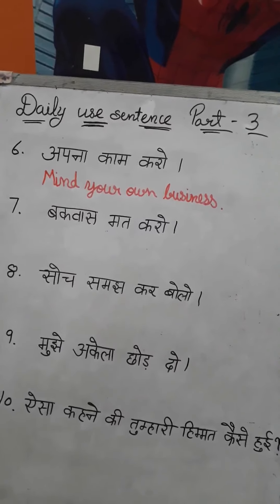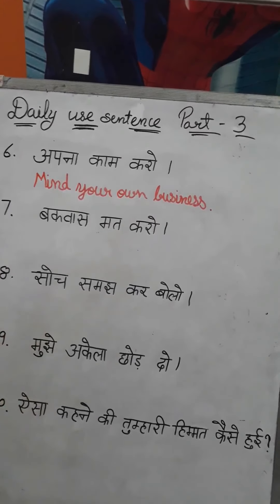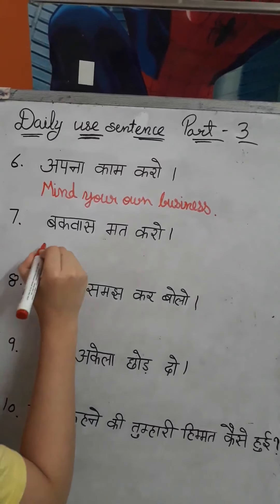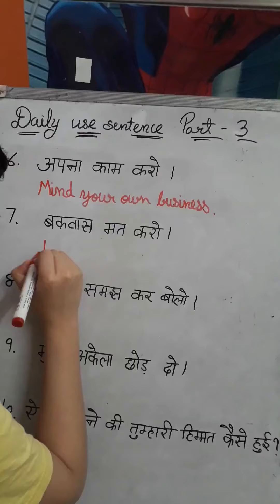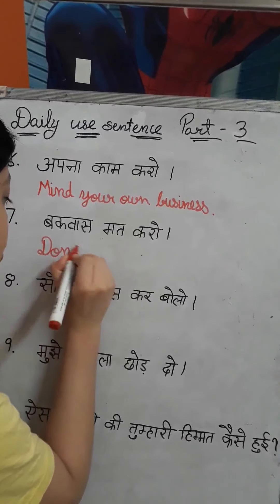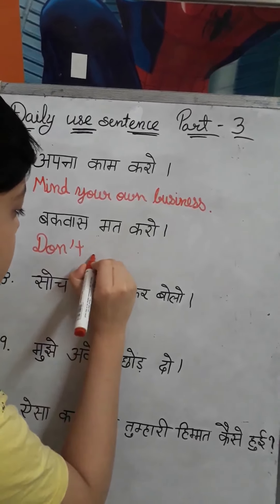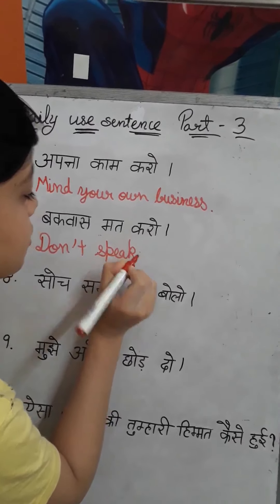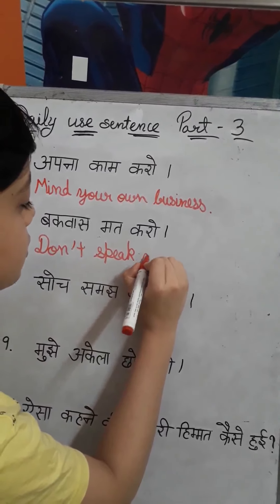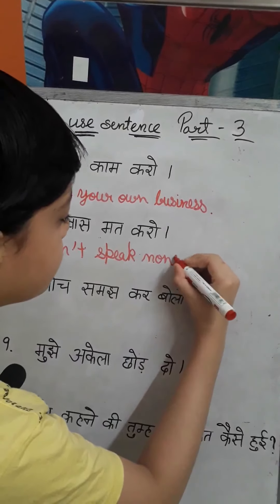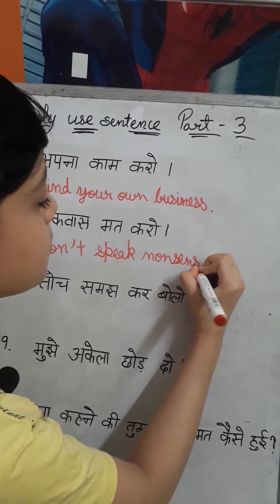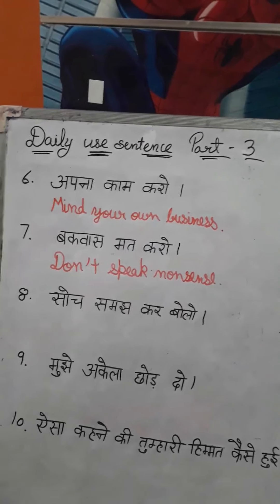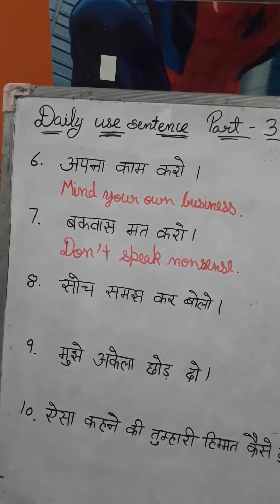So my seventh sentence is: Bakwas mat karo. We will write it in English like: Don't speak nonsense. One more time — Don't speak nonsense.